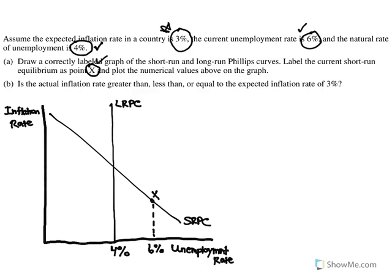We've still got to deal with the 3% expected inflation rate. This is the part students probably struggled with most — where do you put expected inflation? We need to think of expected inflation as the inflation rate once people have adjusted their behavior. So that's going to be the inflation rate at long run equilibrium, right here at 3%.